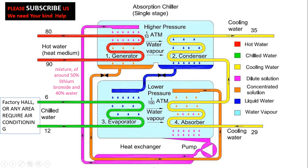Before the recombined lithium bromide and water solution is pumped back to the generator, it passes through a heat exchanger. This heat exchanger recovers some energy to improve efficiency — allowing the solution to gain some heat before entering the generator, saving a small amount of energy. This completes the full cycle of the absorption chiller.